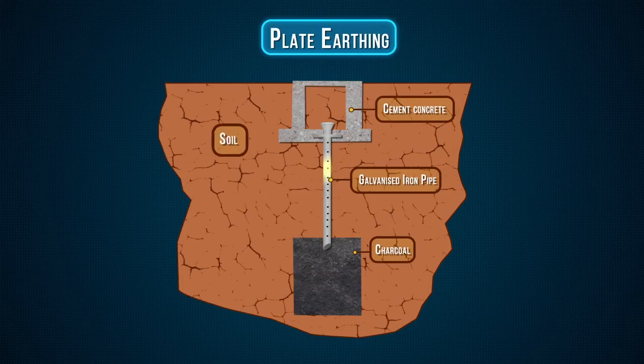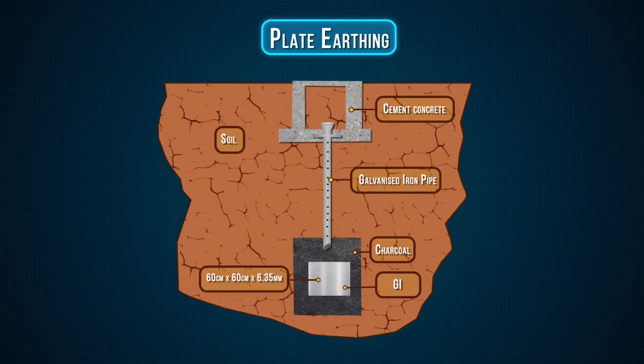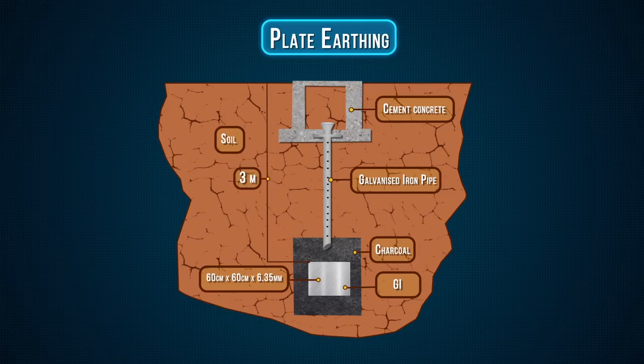Plate earthing. Look at this design for details. In plate earthing system, a plate made up of either copper with dimension 60 cm × 60 cm × 3.18 mm, or galvanized iron of dimensions 60 cm × 60 cm × 6.35 mm, is buried vertically in the earth, which should not be less than 3 m from the ground level.